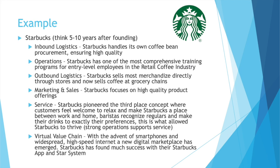Now let's use some real-life examples. We'll start with Starbucks, think five to ten years after founding. Inbound logistics: Starbucks handles its own coffee bean procurement, ensuring that quality remains high. Operations: Starbucks has one of the most comprehensive training programs for entry-level employees in the retail coffee industry — think of all the drinks and techniques a Starbucks barista has to know. Before coffee chains really caught on, this was a unique employee in that industry. Outbound logistics: Starbucks sells most merchandise directly through stores, keeping those profits in-house, but now also sells coffee at grocery chains, expanding their market.